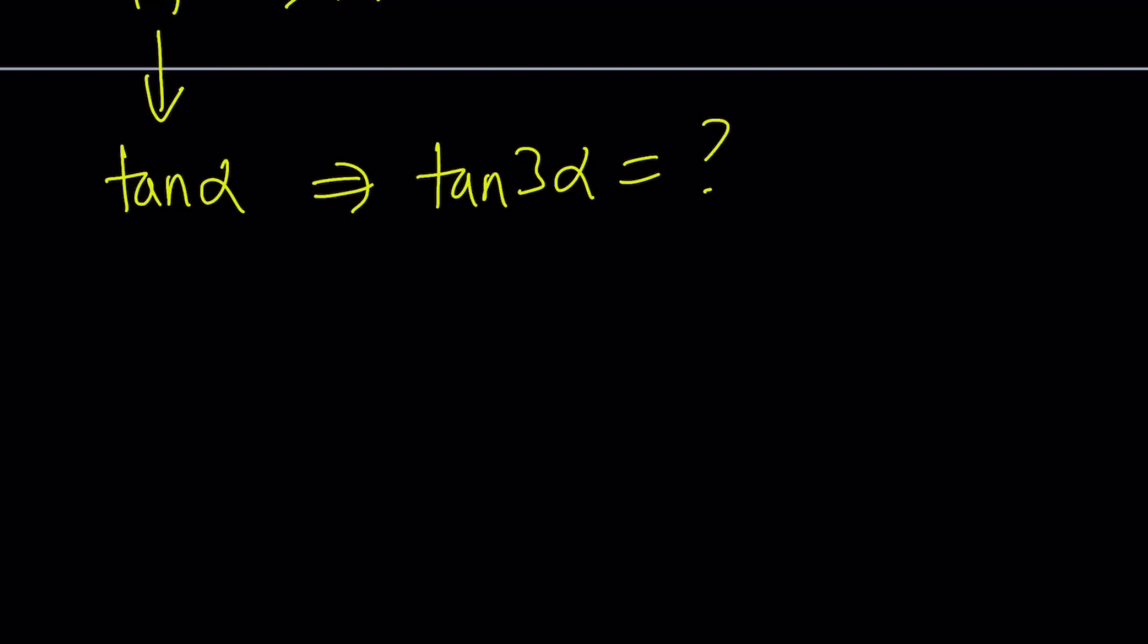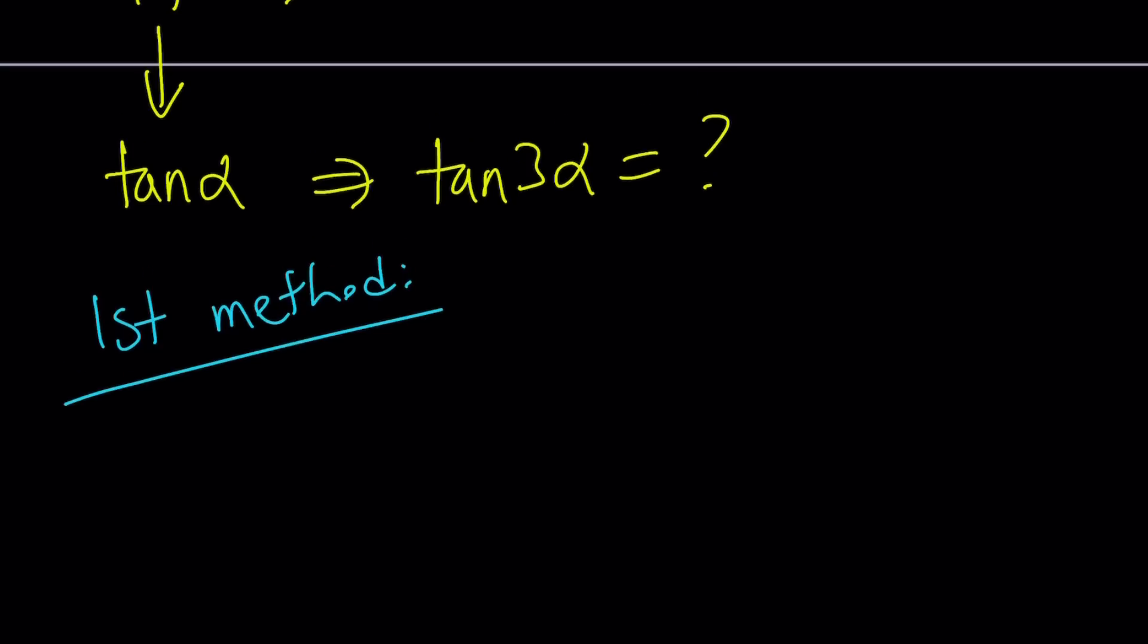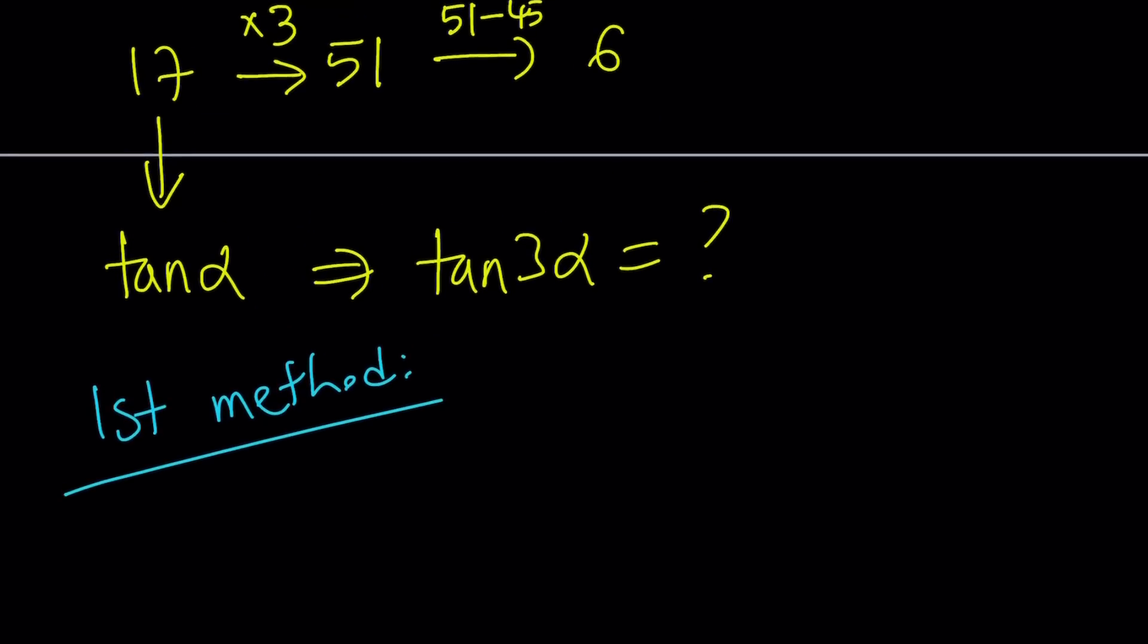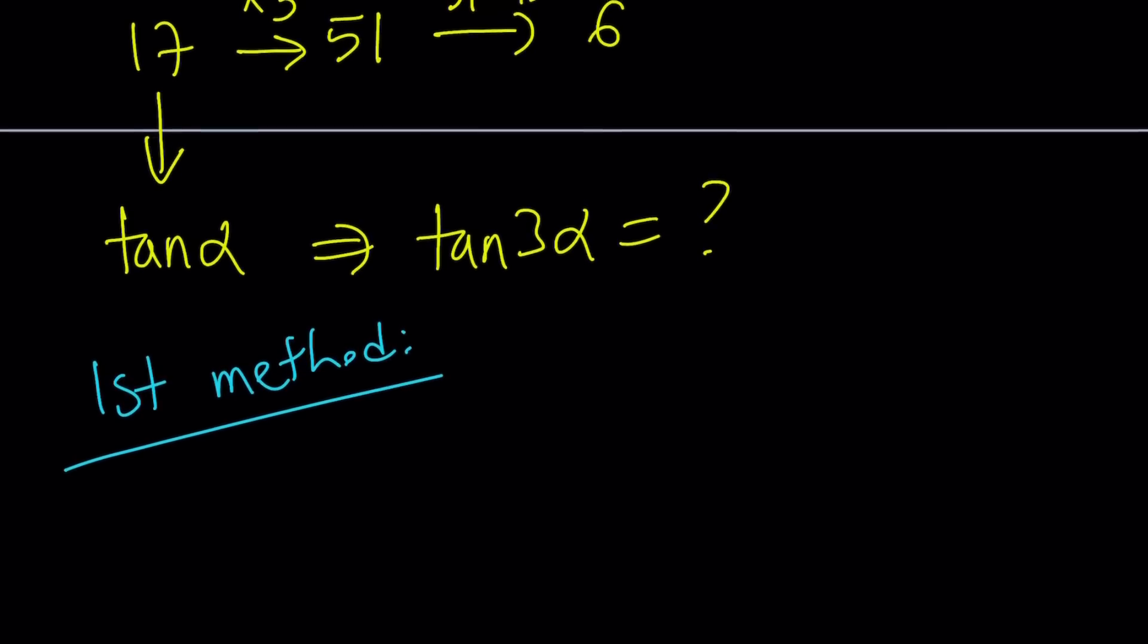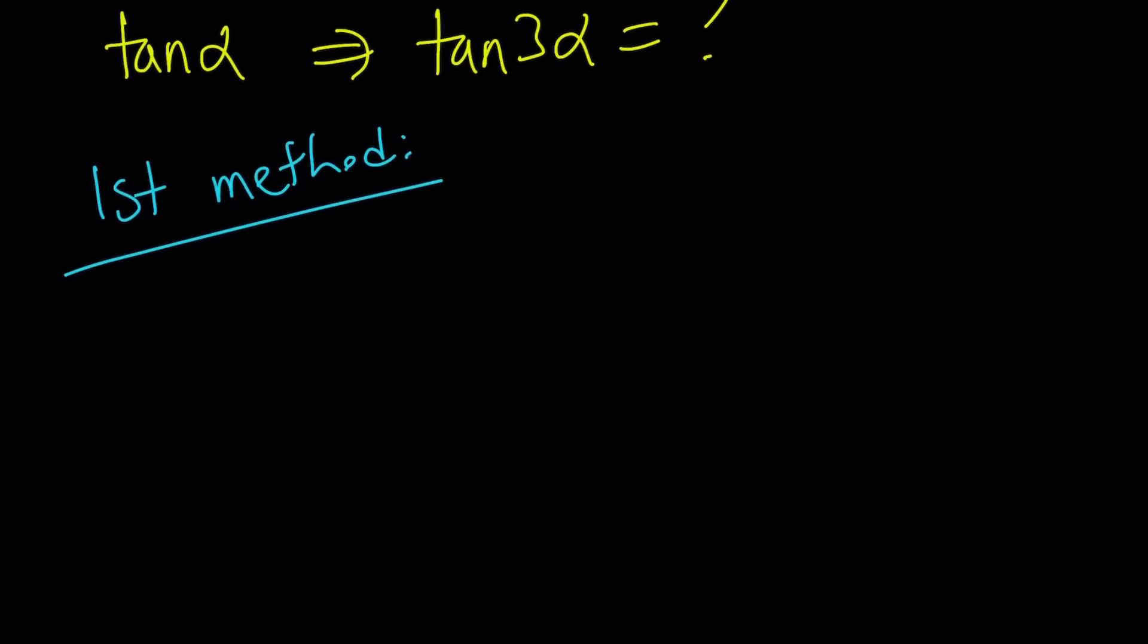First method, the usual method. If you memorized tangent 3 alpha, good for you. That's going to be the third method, which we're not going to talk about. But you can directly use it. But a lot of people don't memorize it. But tangent 2 alpha would be helpful. Anyways, so here's what we're going to do. Start with tangent alpha and evaluate tangent 2 alpha. What is tangent 2 alpha? It is tangent alpha plus alpha, right?